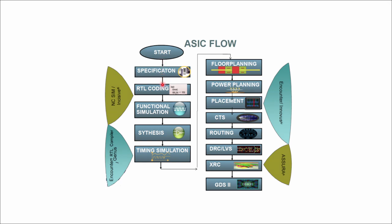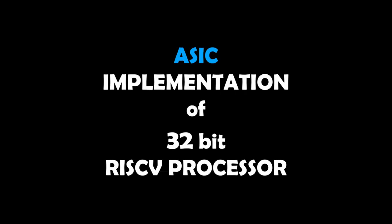Let's see the ASIC flow: start with specification of the project, RTL coding, then functional simulation of each and every block, next synthesis of the processor. We check timing reports and timing simulation during synthesis. Then we go for back-end design: floor planning, power planning, placement, CTS, routing. Next we check DRC (design rule checker) and LVS (layout versus schematic), extract RC, and generate the final GDS file that is sent to the foundry for final chip fabrication. The main objective is to design the RISC-V processor and fabricate it from the generated GDS file.